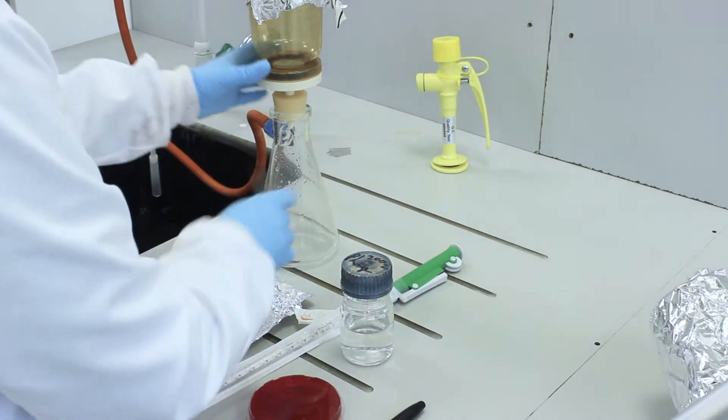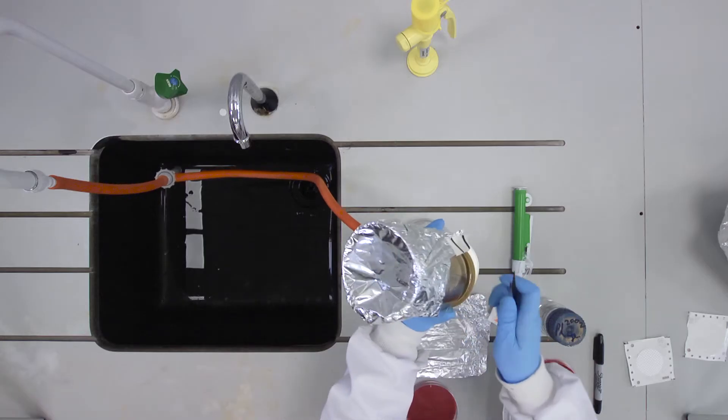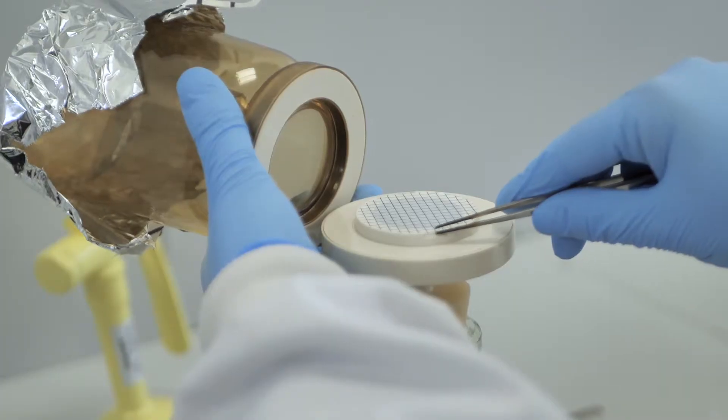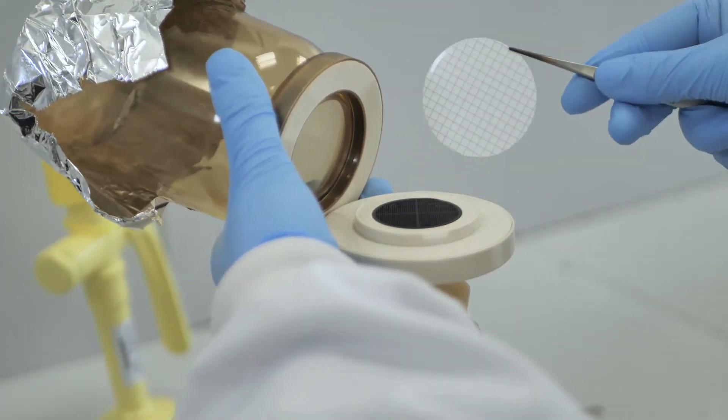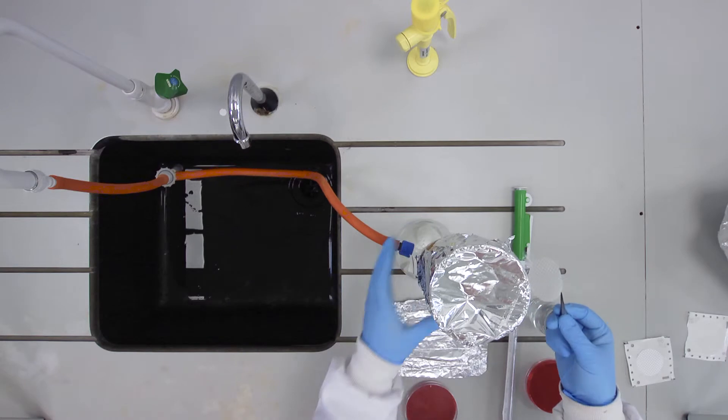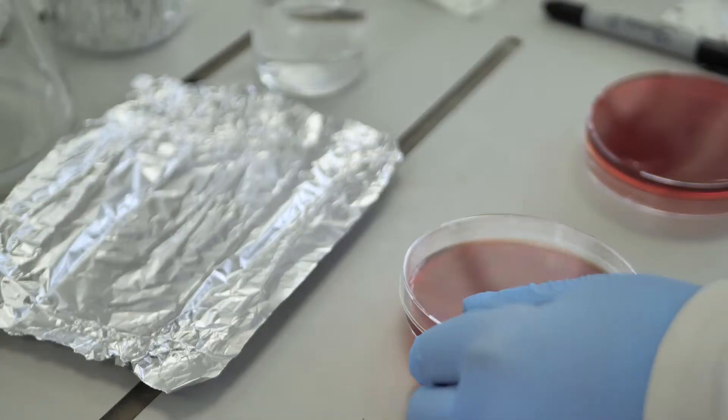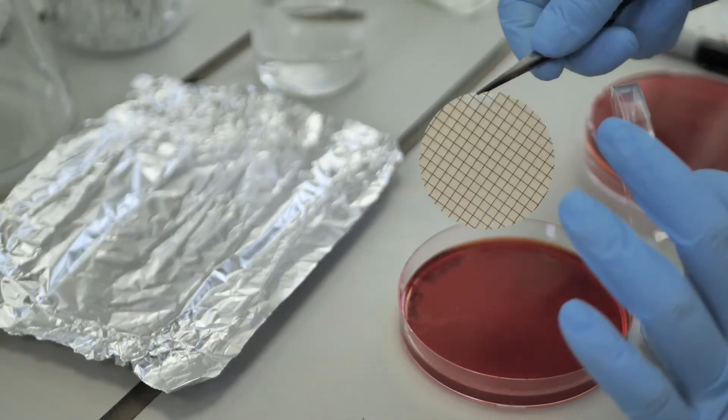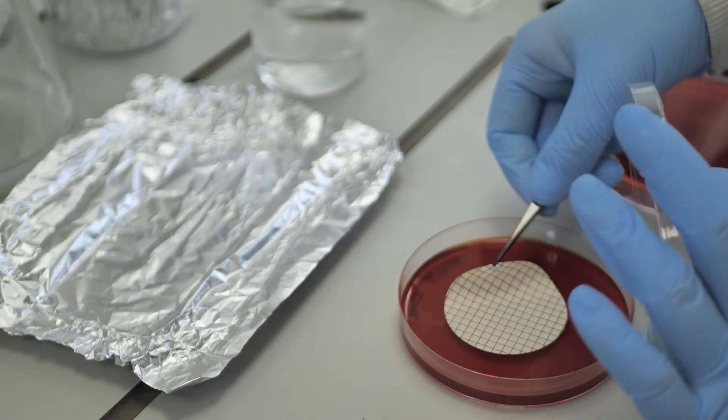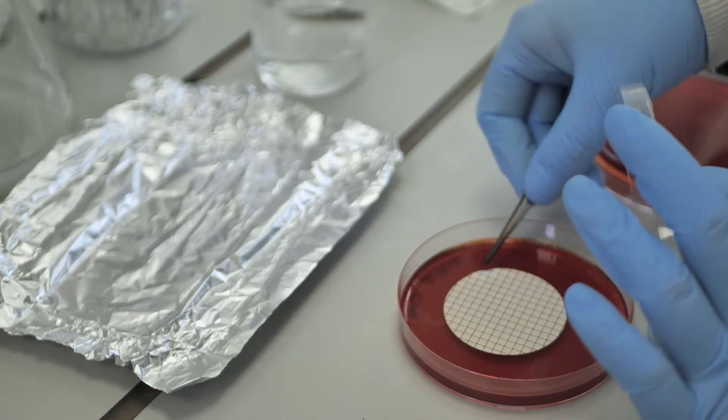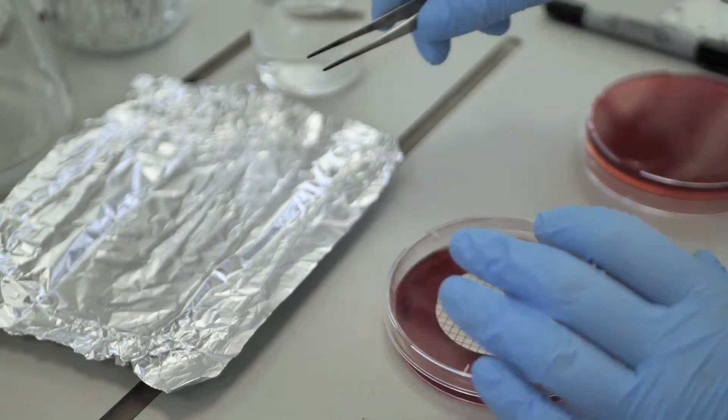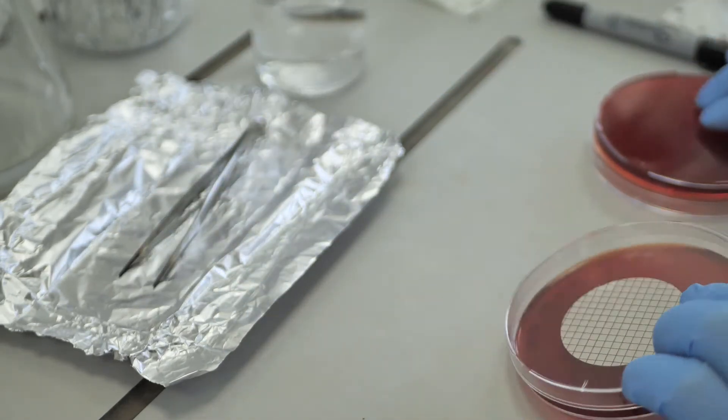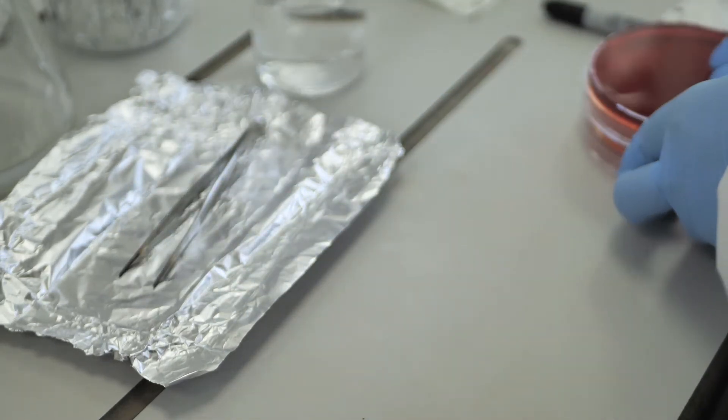Lift the funnel and using the groove in the rim of the base to gain purchase, remove the filter membrane with tweezers and transfer it to the surface of a membrane laurel sulfate agar plate, taking care to lay the filter flat on the surface of the agar.